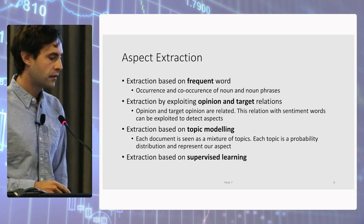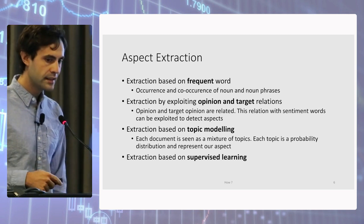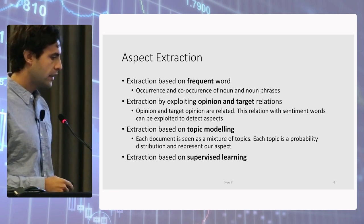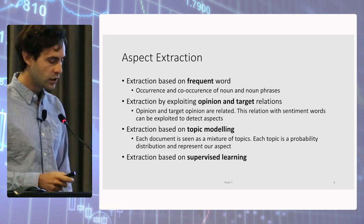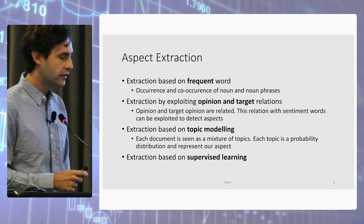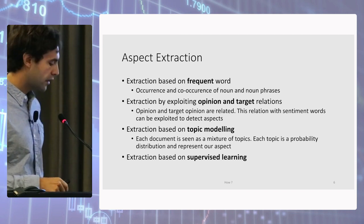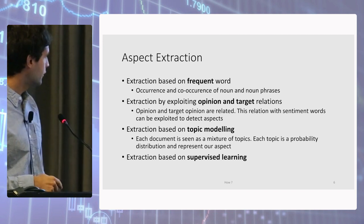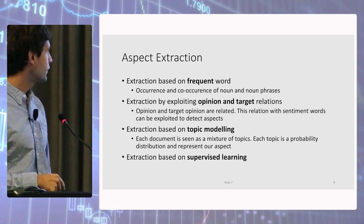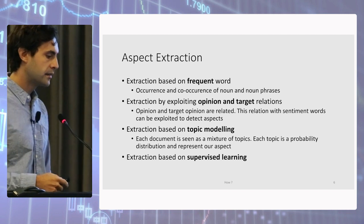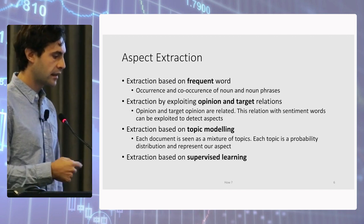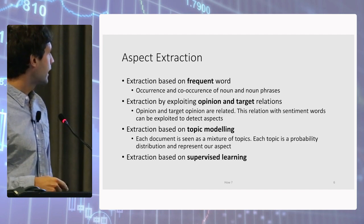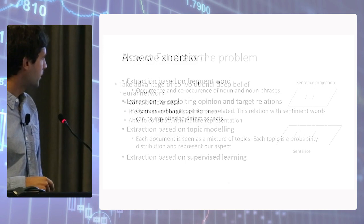In the literature, there are four main ways to address this problem. One is based on word frequency and co-occurrence between nouns or noun phrases. Another way is to try to understand the relation between the opinion word and the opinion target. Since each opinion is addressed to an opinion target, there is a dependency between those two kinds of words in the graph structure of the sentence, and we can leverage that information. Another way is to use topic modeling, which are probabilistic models that believe a document is a mixture of topics sampled from a Dirichlet prior, and we can extract the aspect as the word with the highest probability for each topic.